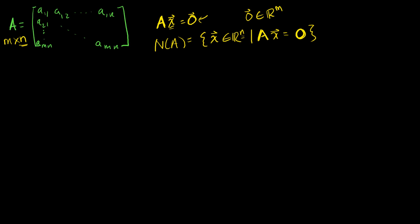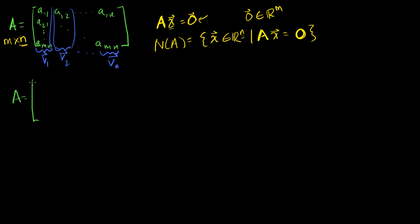We know already that our matrix can be rewritten as a set of column vectors. We could write the first column as v1, then v2, and the last column as v_n. So if I define my vectors this way, I can rewrite matrix A as just a collection of column vectors: v1, v2, all the way to v_n.